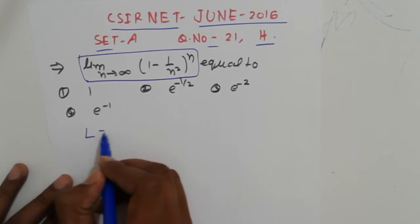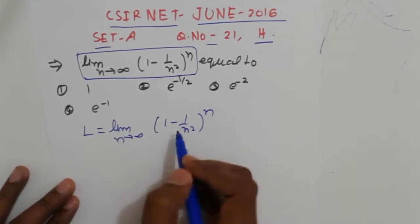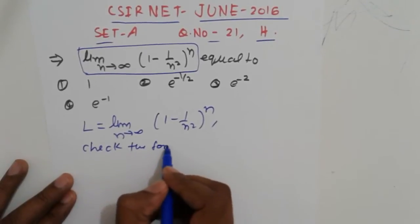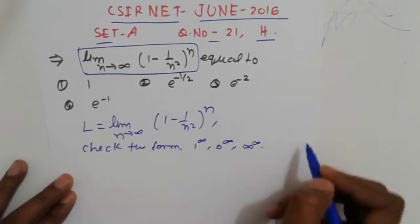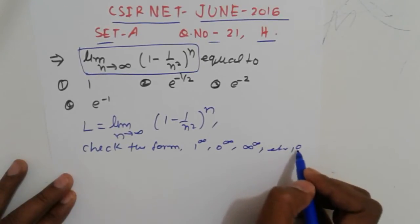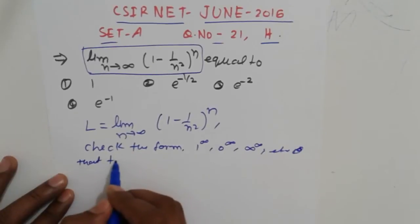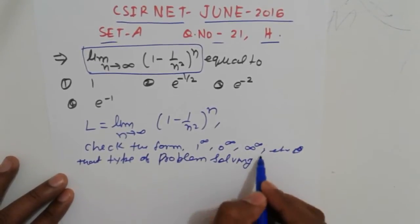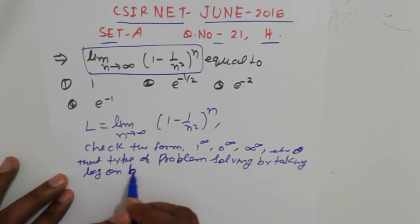It's very easy. This type of problem is asked many times in questions. First, here suppose that L equals limit n tending to infinity (1 - 1/n²) raised to power n. We cannot solve directly by putting the limits, but first check the form.